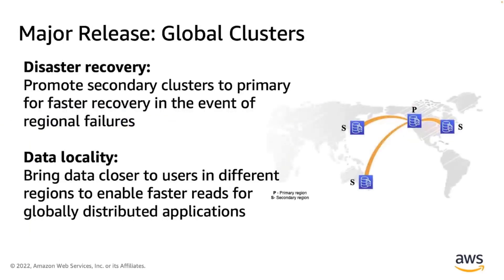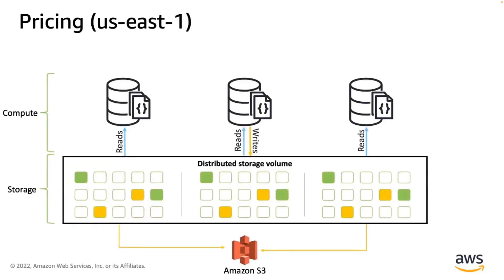Another major release in mid-2021 was our global clusters. We have two primary use cases for global clusters. First, disaster recovery — you can promote your secondary clusters to primary for faster recovery in the event of regional failures. Second, data locality — this is helpful when you want to bring your data closer to users in different regions, which allows faster reads for globally distributed applications.